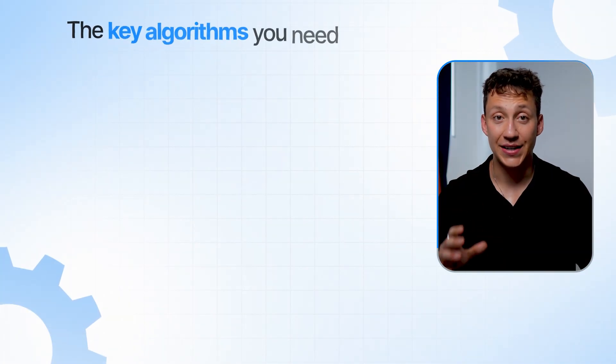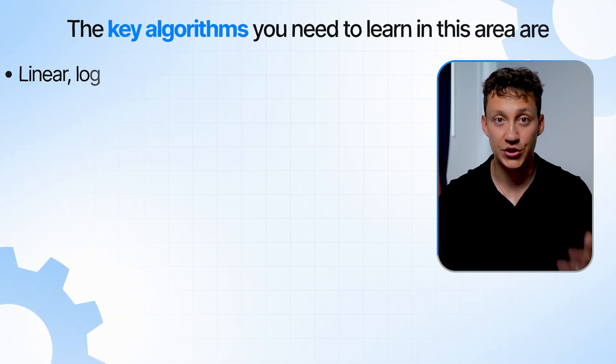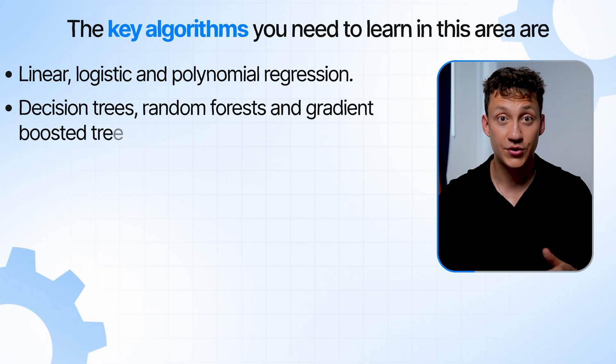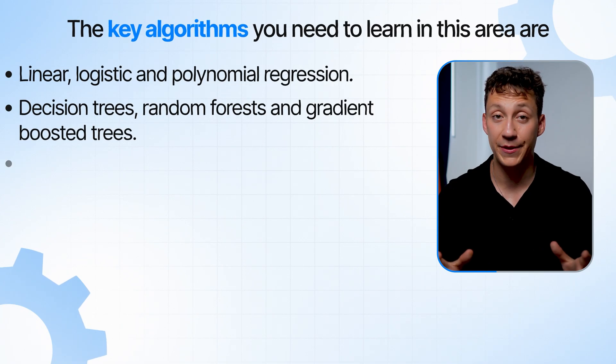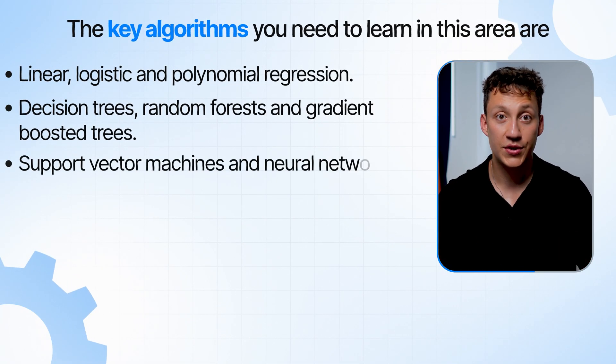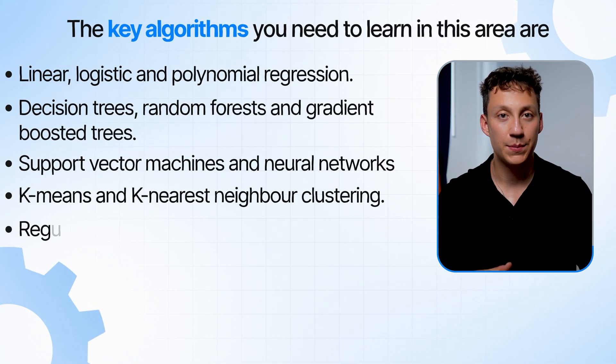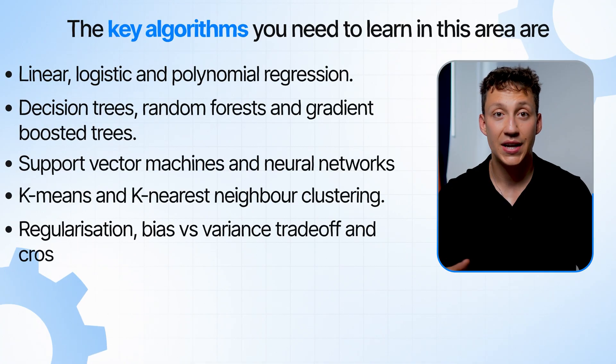It's all about application and really understanding your problem, not using the latest flashy models when they're not needed. The key algorithms you need to learn are: linear, logistic and polynomial regression; decision trees, random forests, and gradient boosted trees; support vector machines and neural networks; K-means and K-nearest neighbor clustering. Also learn key concepts like regularization, bias versus variance, and cross-validation. The following two resources are pretty much all you need to cover all of this machine learning knowledge.